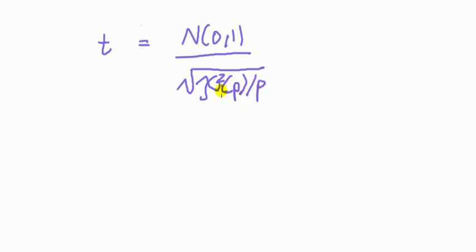First let's say t equals a standard normal divided by the square root of a chi-square with degree of freedom p, divided by its degree of freedom.